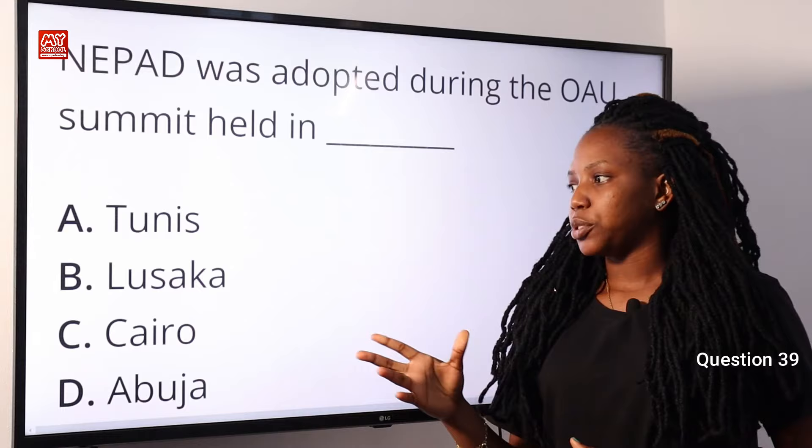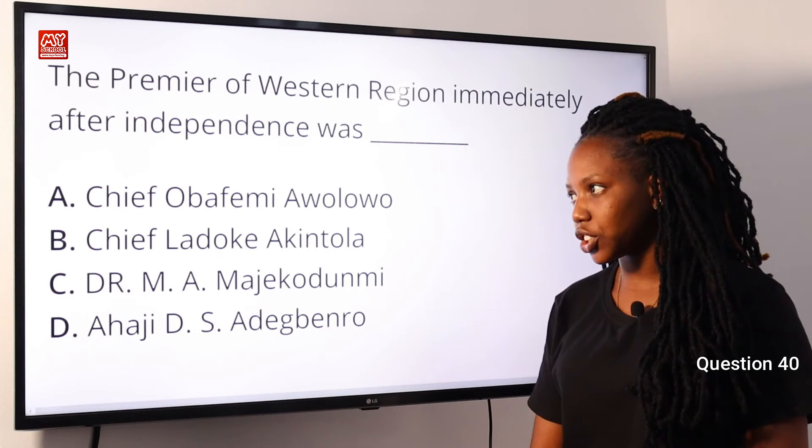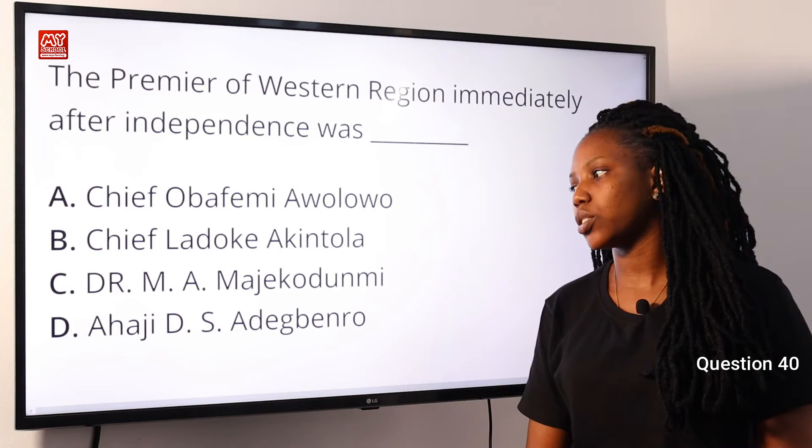Question 40. The premier of the Western region immediately after independence was dash. A, Chief Obafemi Awolowo. B, Chief Ladoke Akintola. C, Dr. M.A. Majekodumi. D, R.J.D.S.